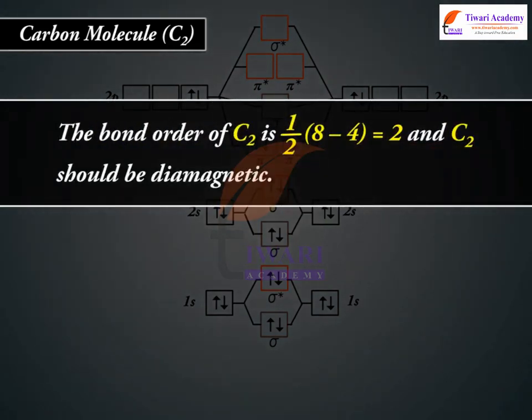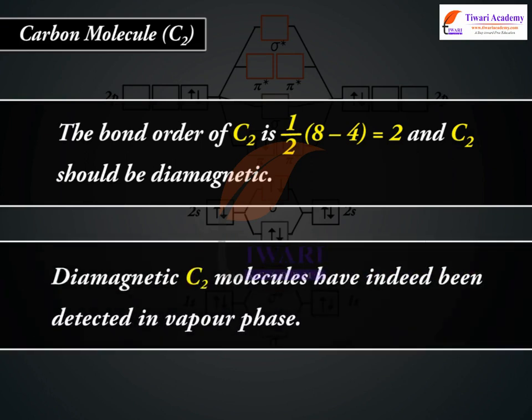The bond order of C2 is 1/2(8 minus 4) equals 2, and C2 should be diamagnetic. Diamagnetic C2 molecules have indeed been detected in vapour phase.